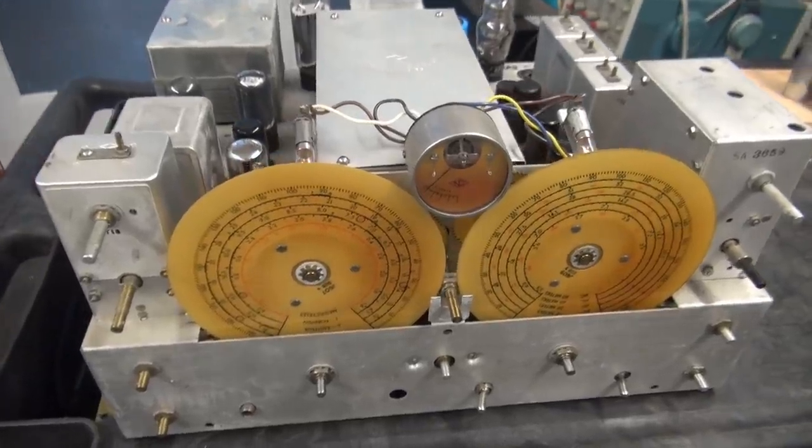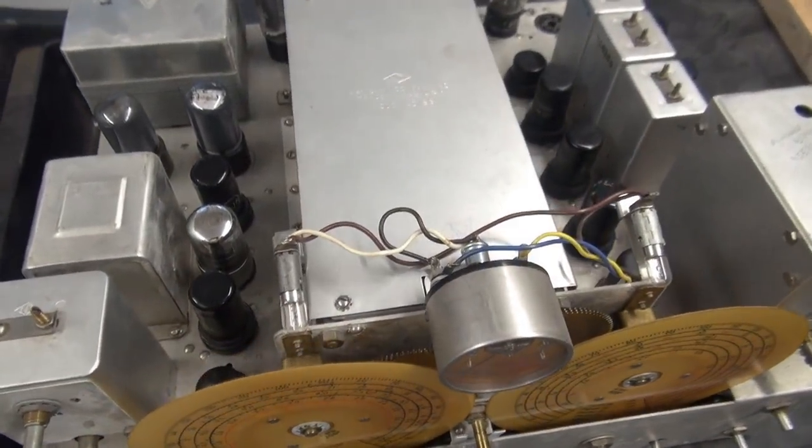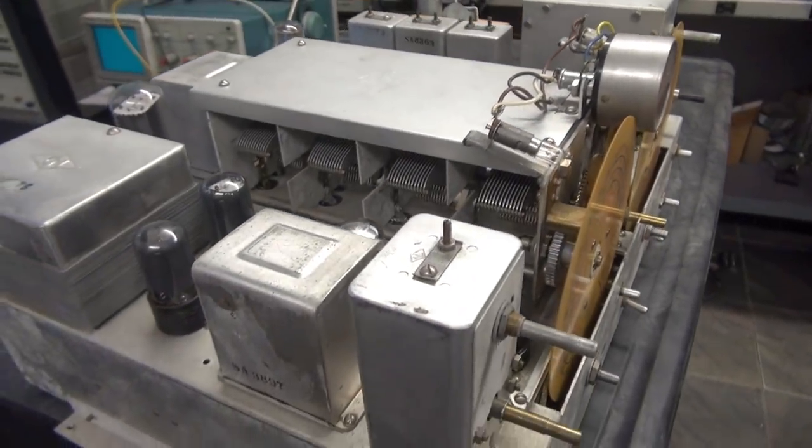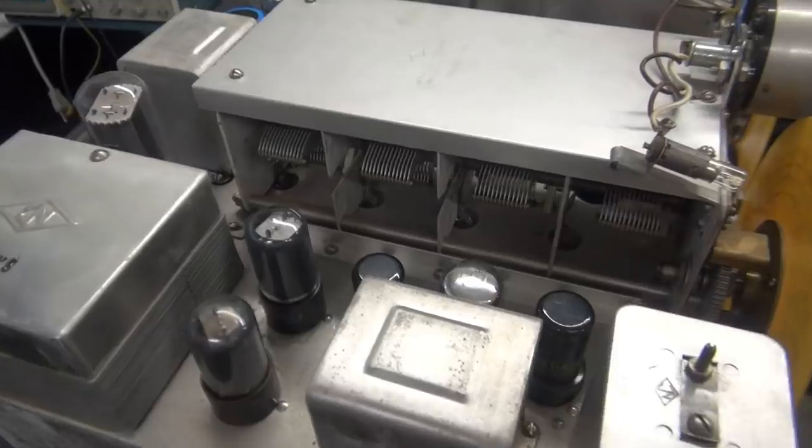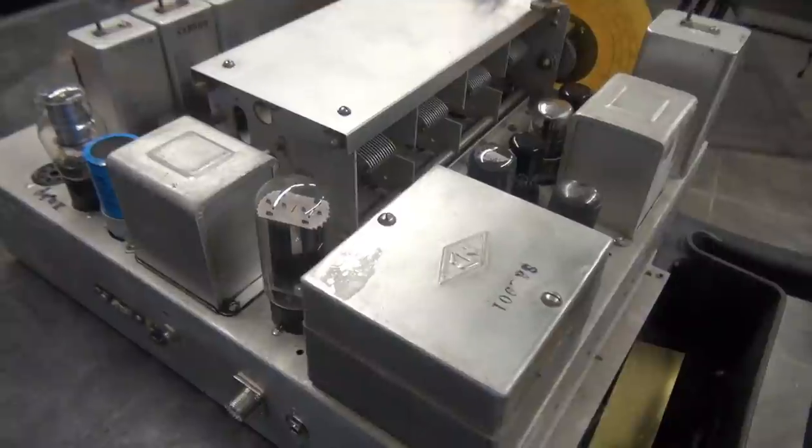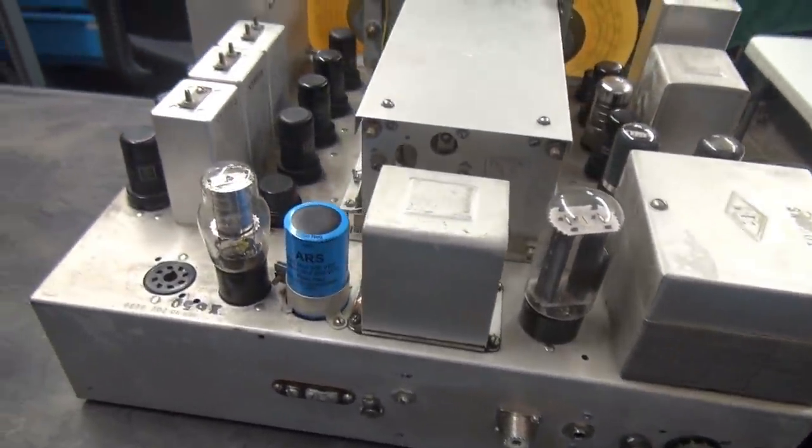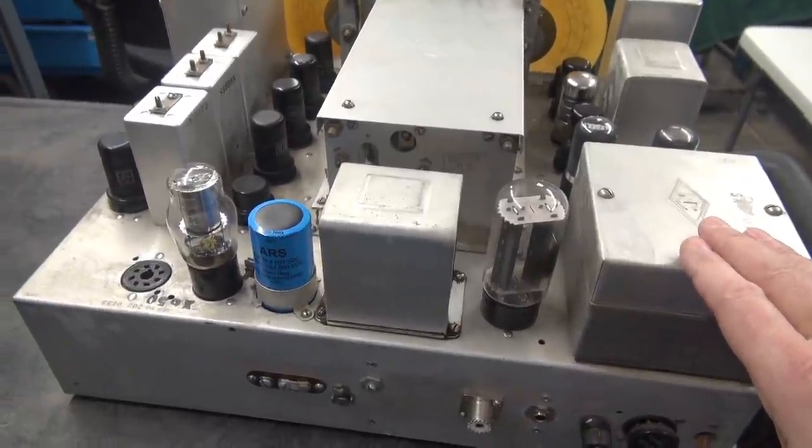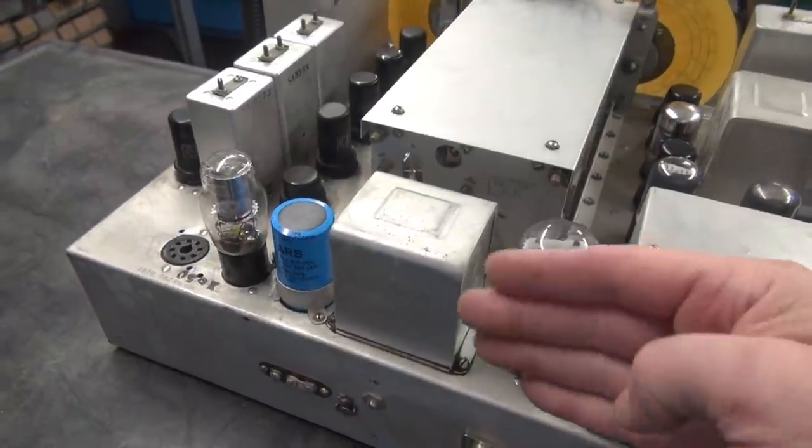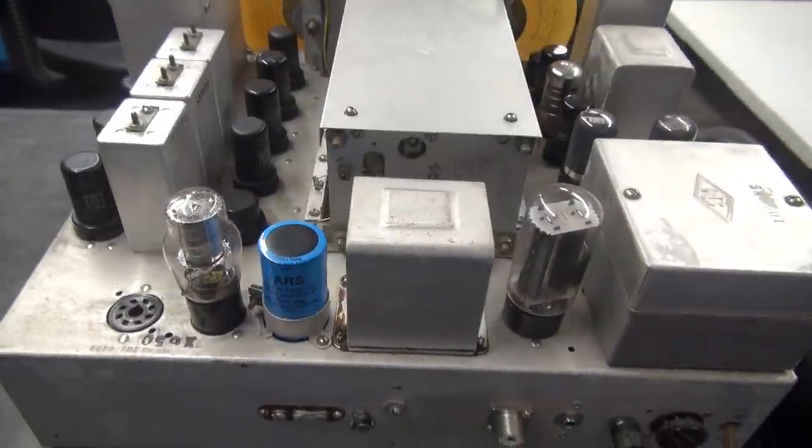Here is the chassis removed from the cabinet. Check out that construction - she is just gorgeous, these guys really knew how to make radios back then. The first thing I always do with these is pull out the filter cap and replace it. The reason a lot of these power transformers fail is because the main filter cap shorts out, draws excessive current, and melts down the transformer.